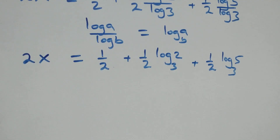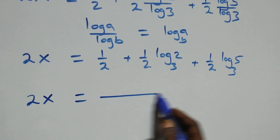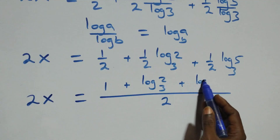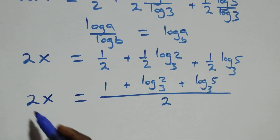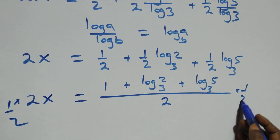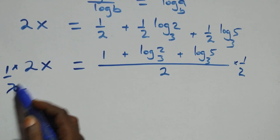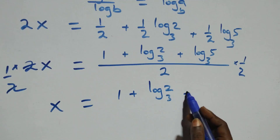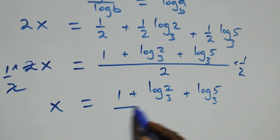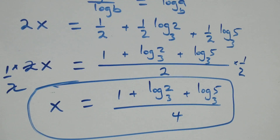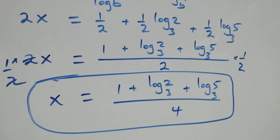We bring this together as a fraction: 2x equals (1 + log₃2 + log₃5) all over 2. To isolate x, we multiply both sides by 1 over 2, so 2 cancels, giving x equals (1 + log₃2 + log₃5) over 4. That is the value of x: x equals (1 + log₃2 + log₃5) / 4.